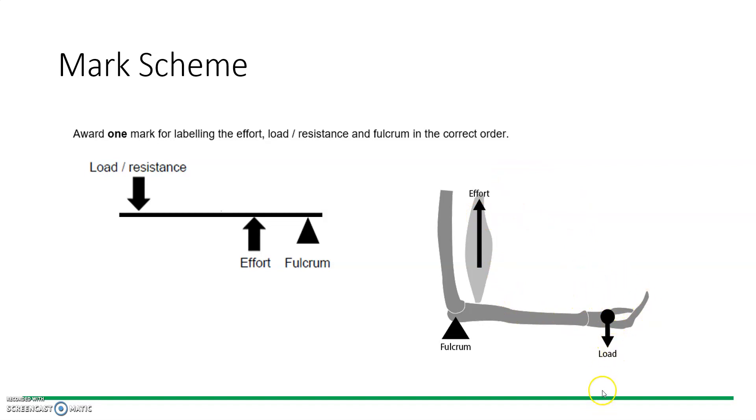We will look at moment arms in a different video at a later date, particularly for those studying A-level or undergraduate work. Make sure they're in the correct order, so it is a third class lever, a mechanical disadvantage lever. The fulcrum's at the end, effort is in the middle, and load resistance is at the end, and that will give you that one mark.